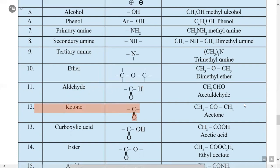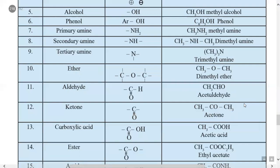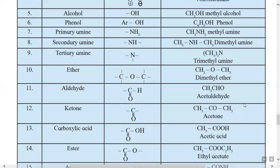The twelfth type is ketone, having the functional group C=O (carbonyl). CH3COCH3, with C=O bonded to methyl groups on both sides, is dimethyl ketone, also called acetone. Replacing both CH3 groups with C2H5 gives diethyl ketone.